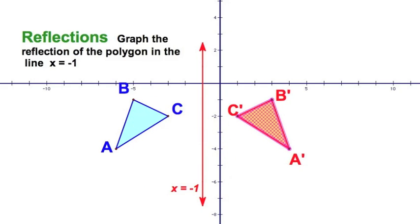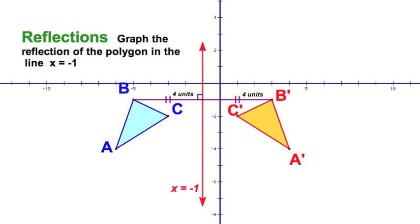I can imagine what the reflection looks like. We remember that the distance from the preimage to the line of reflection must equal the distance from the line of reflection to the image. Since it's perpendicular to a vertical line, I can just count horizontal units for each point. I could do the same for each of the other vertices — that's the easy way to find this reflection.